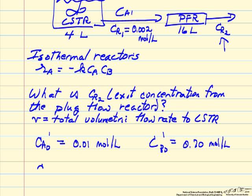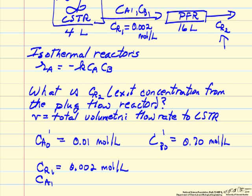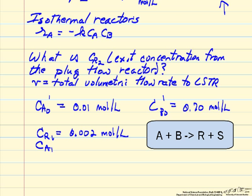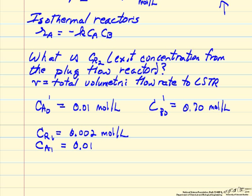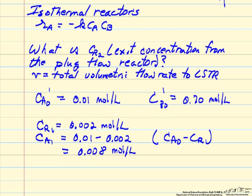And so if Cr1 is equal to 0.002 moles per liter, then we should be able to use stoichiometry to know what Ca1 is and what Cb1 is. Because the reaction stoichiometry is 1 to 1, then Ca1 would be the inlet value of A, Ca0 minus Cr1. And it gives us the concentration leaving the CSTR, which of course means this is also the concentration within the CSTR.